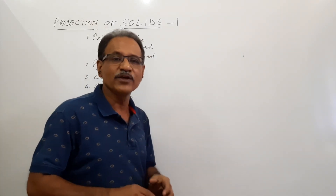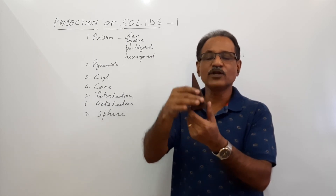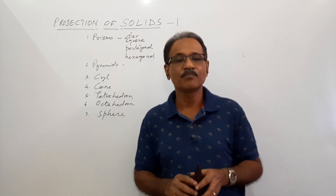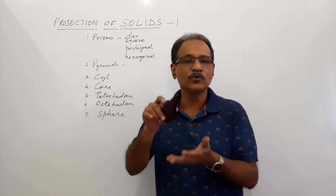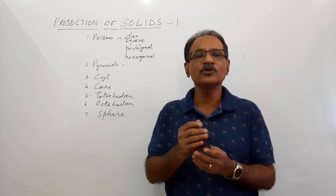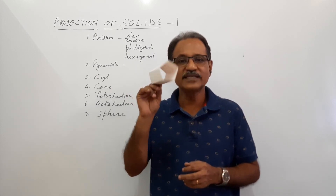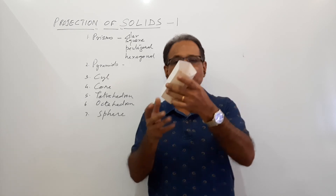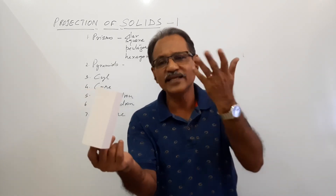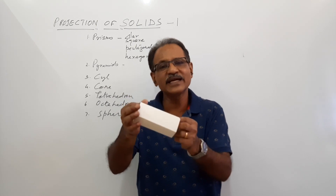So this is Solids 1, where I have given you the various types of solids, the various nomenclature and terminology related to solids, the types of solids, and what is simple position. When you are asked to draw a position, you draw the simple position first and then proceed. It is always better if you make models like this — a prism, you can make all prisms for better understanding. Seeing is the best way of understanding rather than just visualizing.